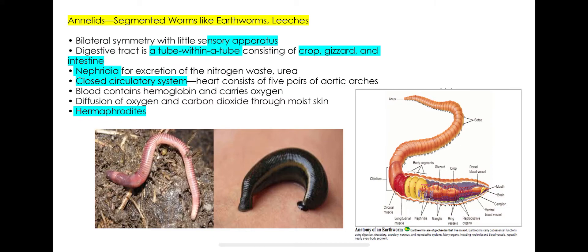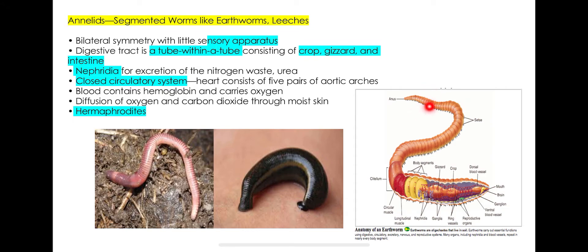The next phylum is Annelida, or segmented worms. When we talk about Annelida, we start to discuss segmentation in animals and the closed circulatory system. Segmentation means the body is composed of different segments, and each group of segments has a specific function.